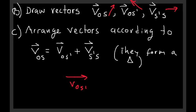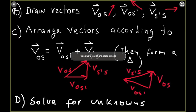If you start with V_OS', then you add to that vector V_S'S by drawing the tail at the head of V_OS'. The resulting vector that goes from the tail of the first one to the head of the second one is V_OS. Step D is to solve for the unknowns — it might be the magnitude of one of those velocities, the direction of one of those vectors, or anything else.